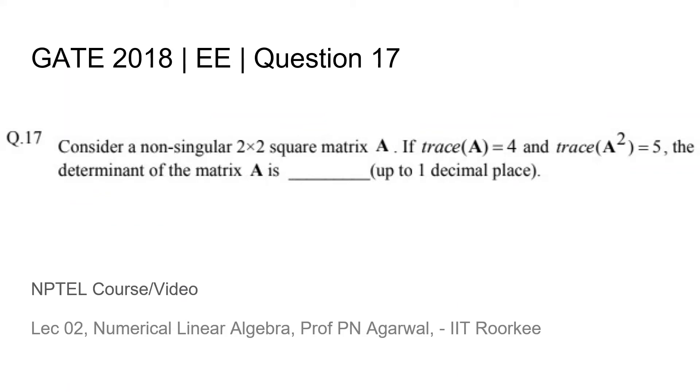This is question 17 from the GATE 2018 EE paper where we are given that a non-singular 2×2 square matrix A has trace(A) = 4 and trace(A²) = 5. What is the determinant of the matrix A up to one decimal place? Underneath the question you will find the title of the NPTEL course or video relevant to this topic.